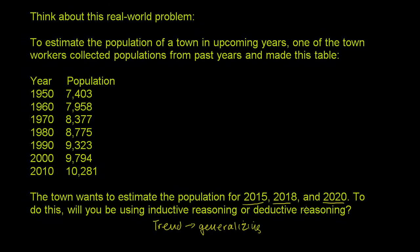Deductive reasoning is taking some set of data or some set of facts and using that to deduce other facts that you know are true. When you generalize with inductive reasoning, you don't necessarily know whether the trend will continue, but you assume it will — you don't know 100% it'll be true. With deductive reasoning, you know it'll be true. You're starting with facts and then deducing other facts from those facts.